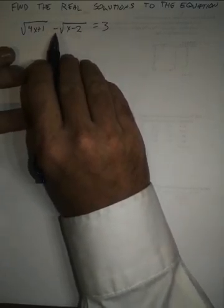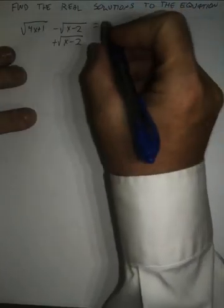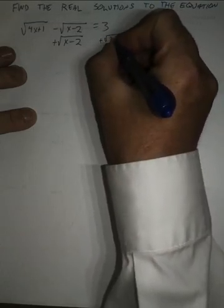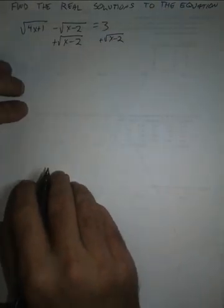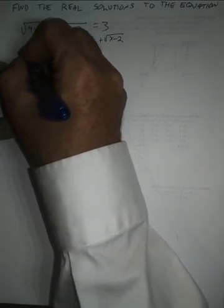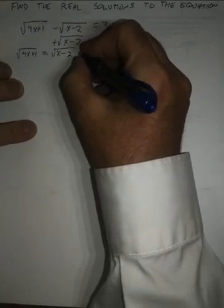First, I need to isolate one of the terms. I'm going to leave this term on one side and we're going to add the square root of x minus 2 to both sides. So I get the square root, principal square root of 4x plus 1. That's equal to principal square root of x minus 2 plus 3.